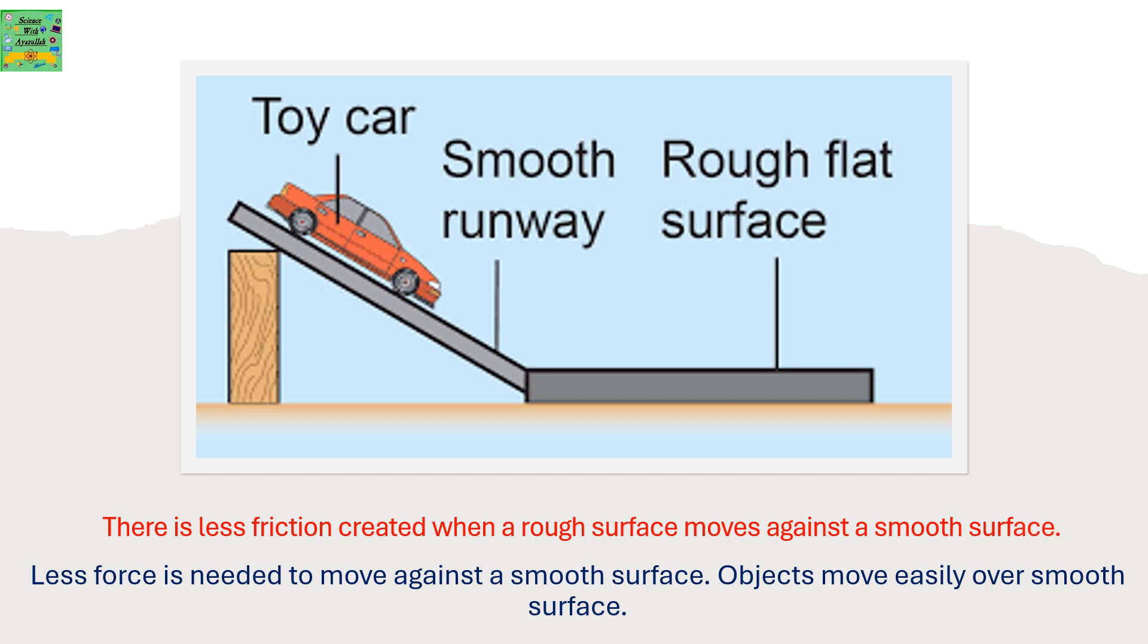There is less friction created when a rough surface moves against a smooth surface. Less force is needed to move against a smooth surface. Objects move easily over smooth surfaces.